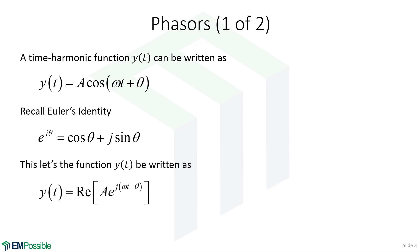Given Euler's identity, and given that we have a function that is some amplitude multiplying a cosine, if we think of this first cosine in Euler's identity as the cosine of our function, that lets us write our function y of t slightly differently. We can say that y of t is the real part of a complex exponential. The complex exponential is A times E to the j, and in parentheses are the arguments inside our cosine.